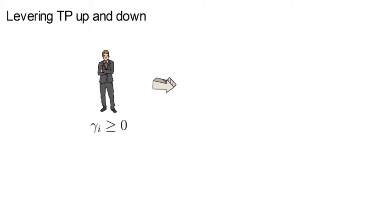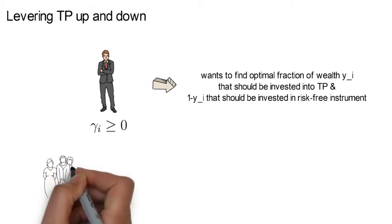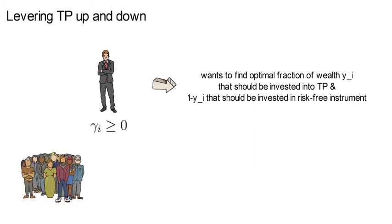The mean variance investor seeks to find the optimal fraction of wealth yi that should be invested into the tangency portfolio, and the share 1 minus yi that should be invested into the risk-free instrument. So if we connect back to the case where we are looking for the optimal portfolio for each of the 200,000 employees of Daimler, we would solve the following problem.